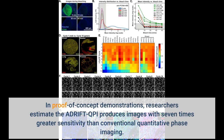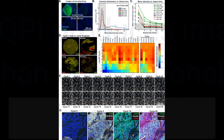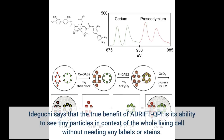In proof-of-concept demonstrations, researchers estimate that Adrift QPI produces images with seven times greater sensitivity than conventional quantitative phase imaging.